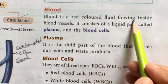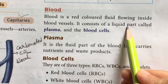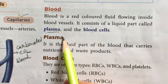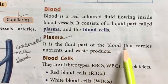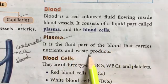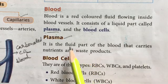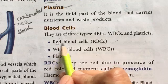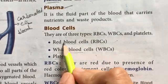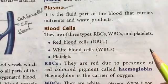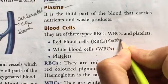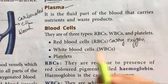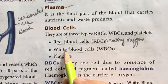The third important part of the circulatory system is blood. Blood is the red-colored fluid flowing inside the blood vessels. It consists of a liquid called plasma and blood cells. Plasma is the fluid which carries nutrients and waste inside the body. Blood cells include red blood cells, white blood cells, and platelets. Red blood cells make our blood red, and they carry oxygen to different parts of the body.